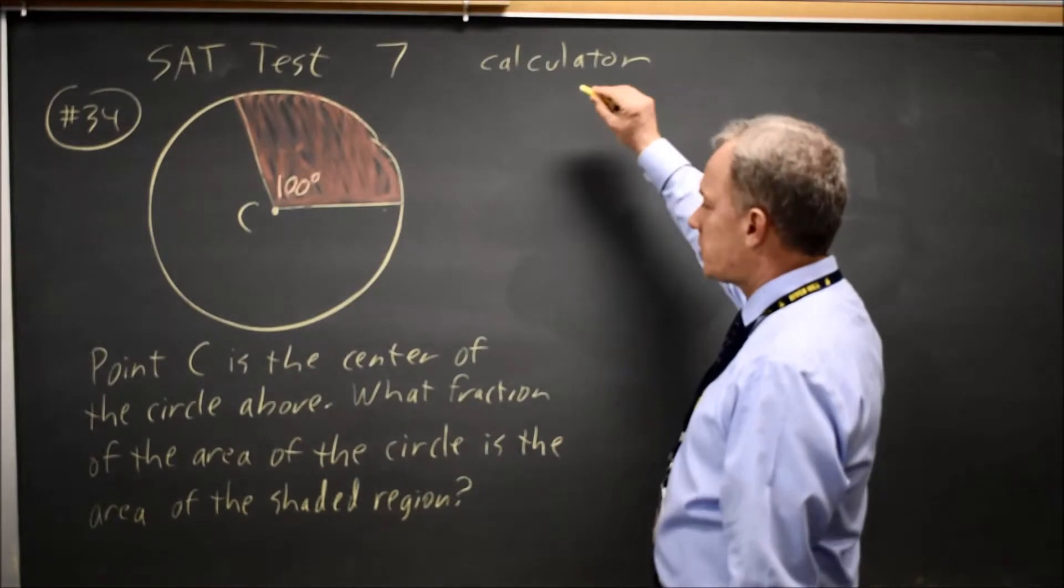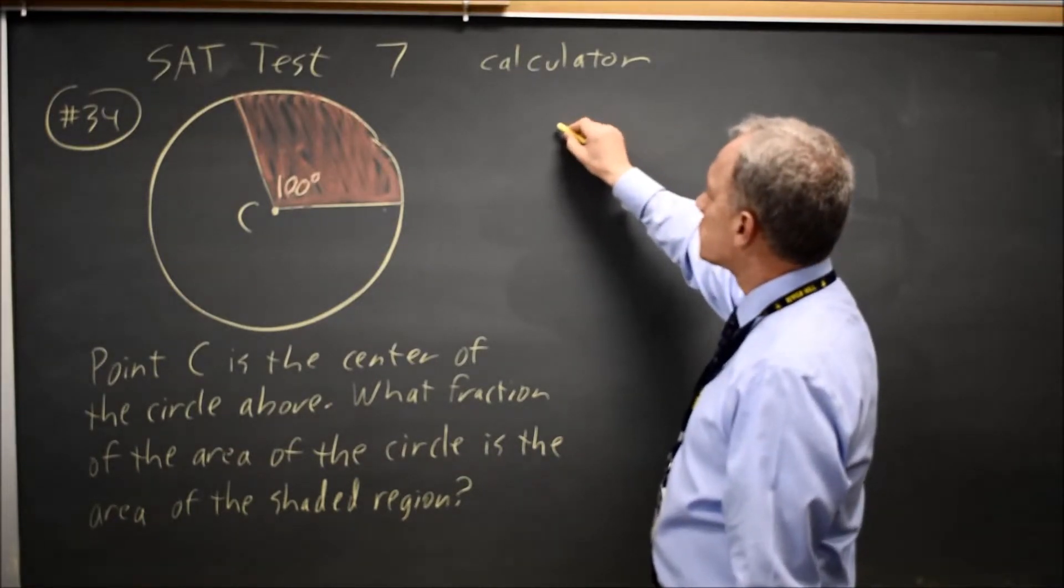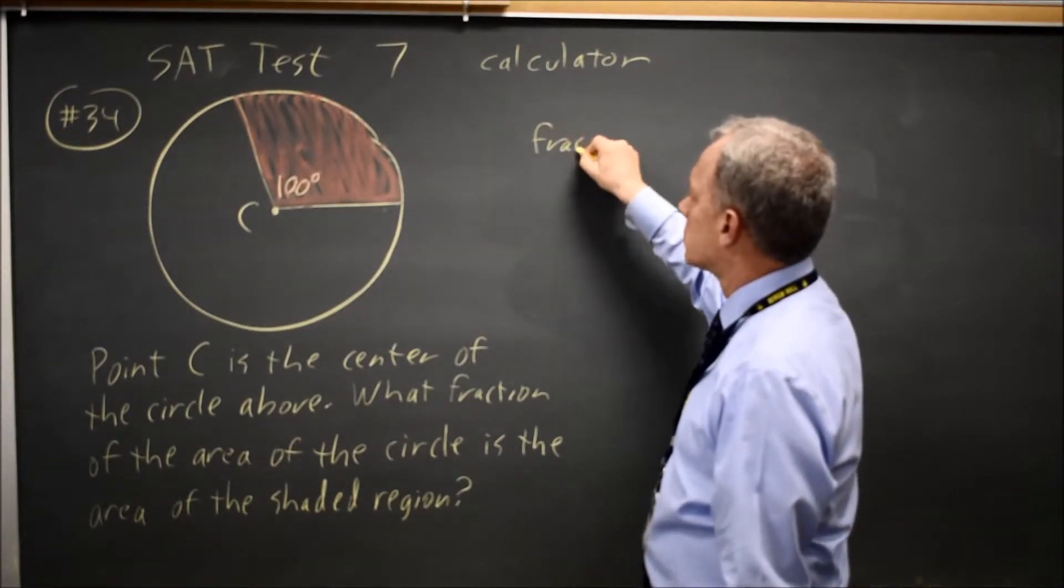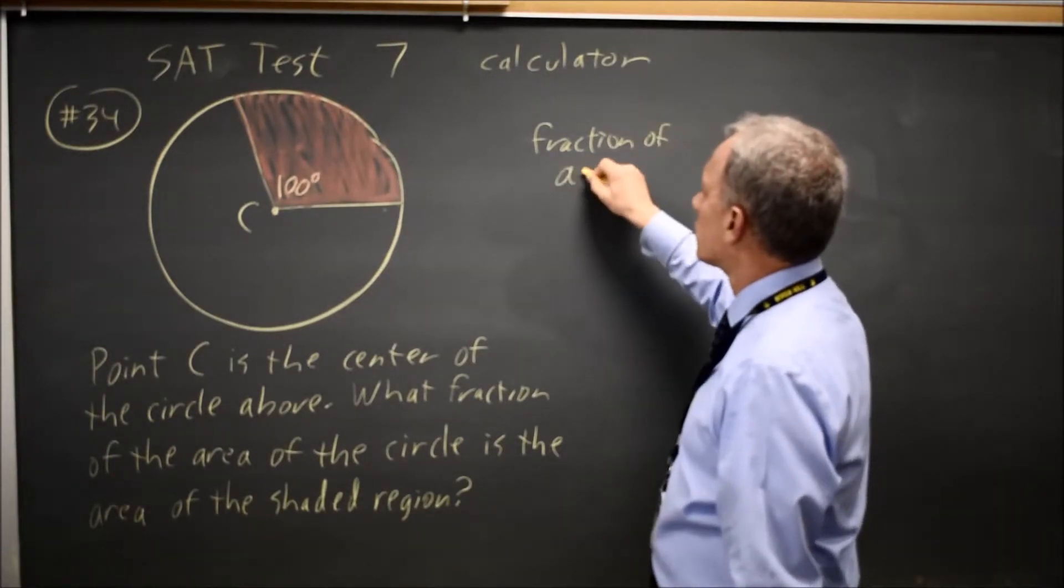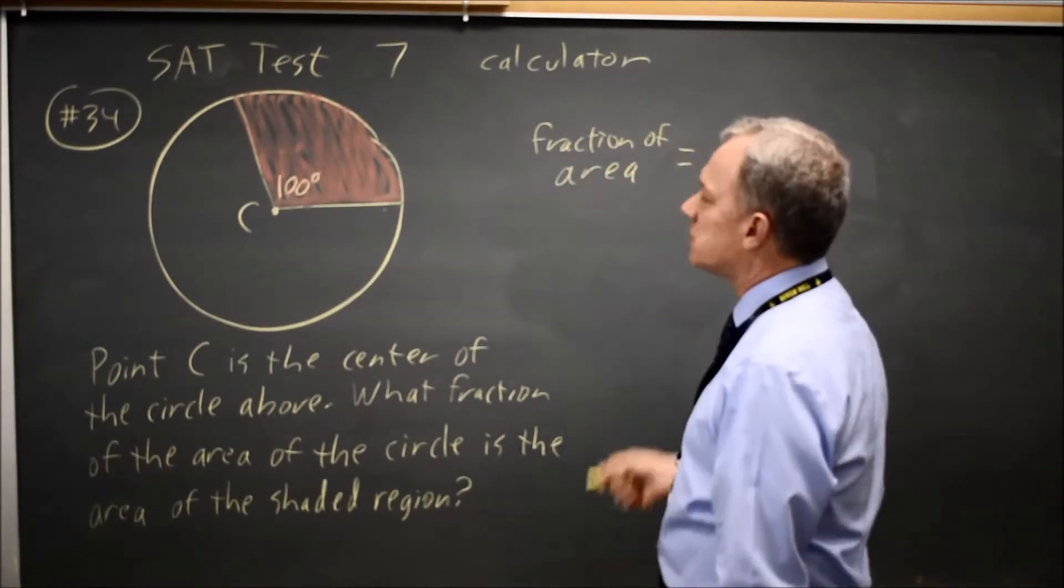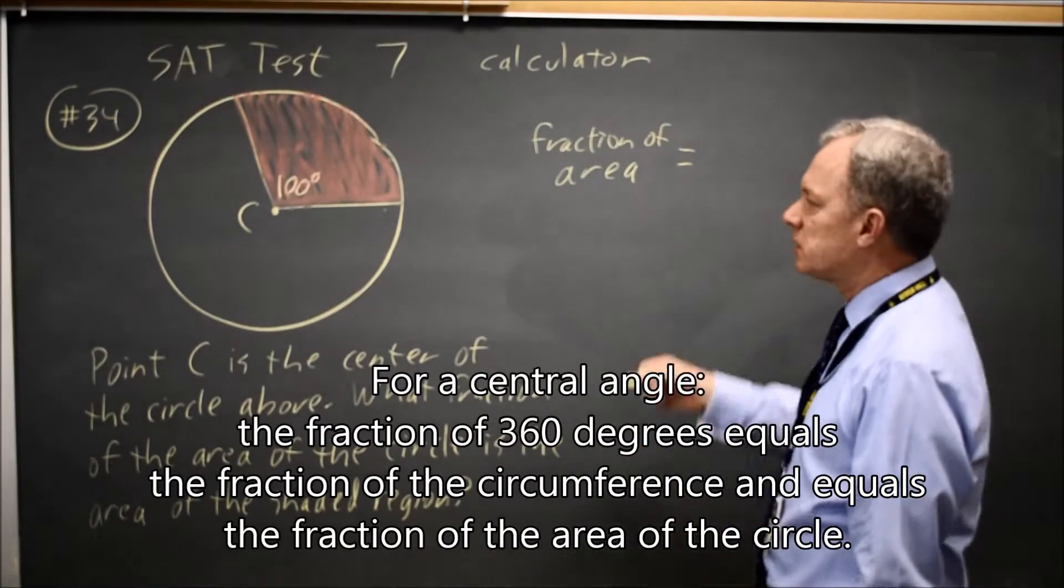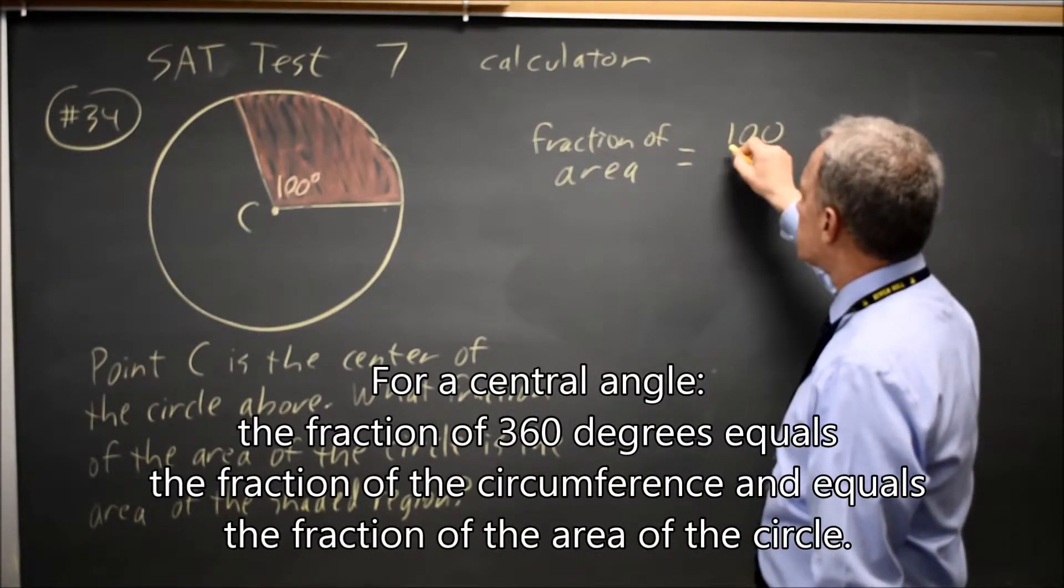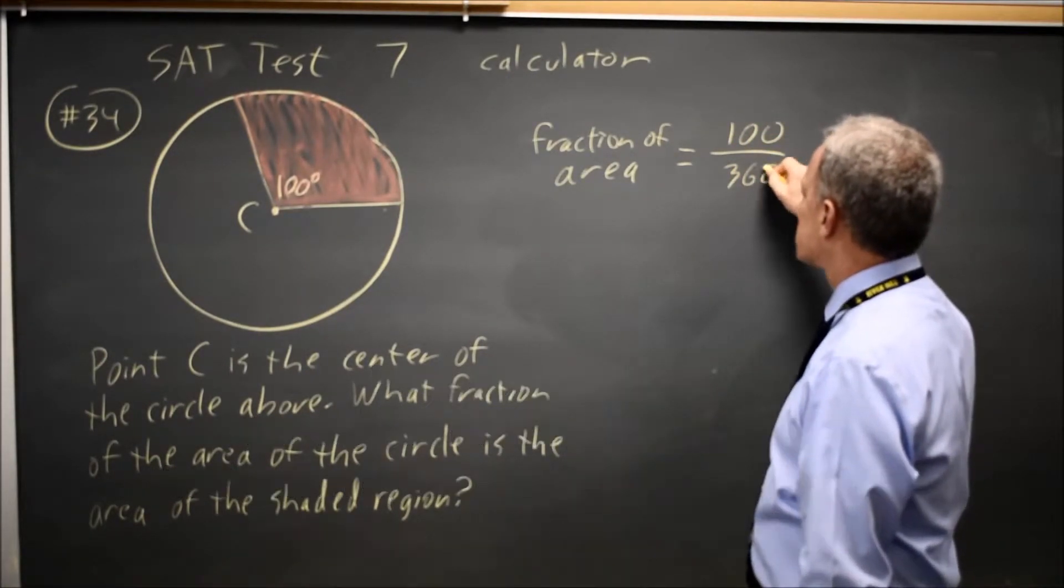We know that the fraction of the area, which is what they're asking for, equals the fraction of the central angle, which is 100 degrees out of 360 degrees.